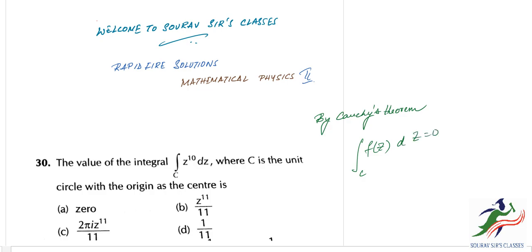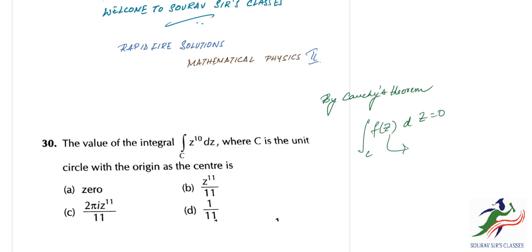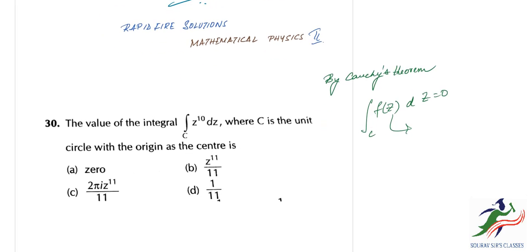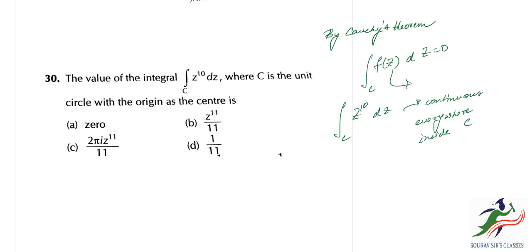By Cauchy's theorem, the integral of f(z) dz is equal to zero if f(z) is continuous at all points inside c. We have z to the power 10, which is continuous everywhere inside c. Hence, the integral of z to the power 10 dz equals zero, and the answer is obviously A.